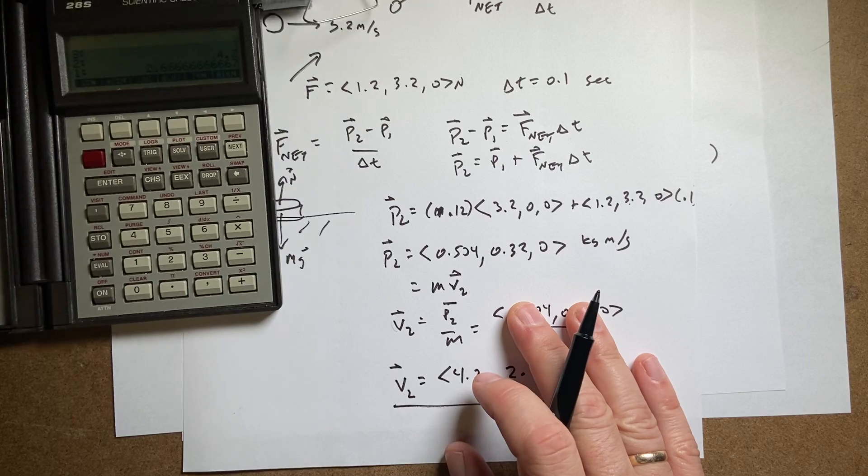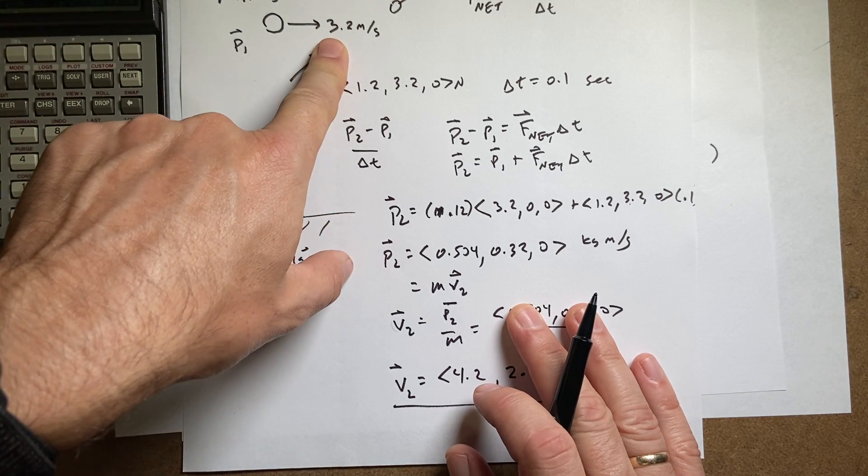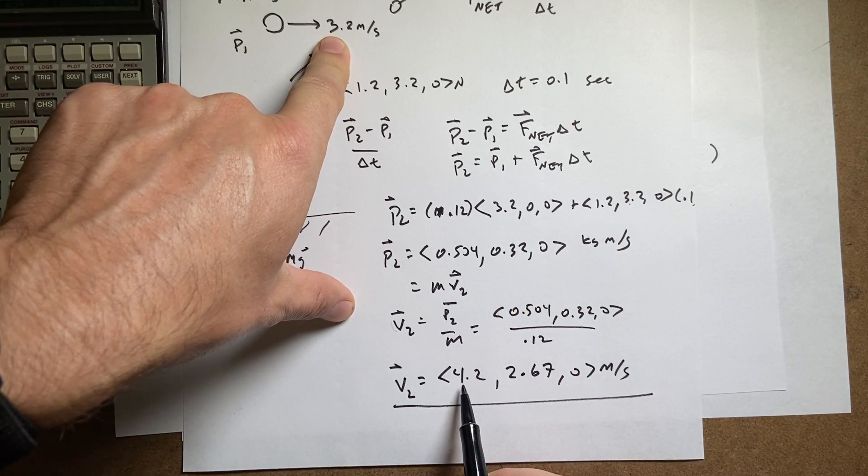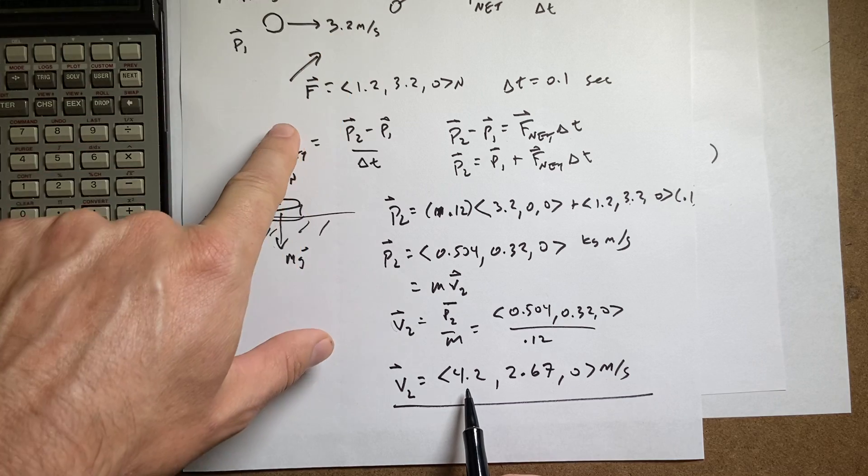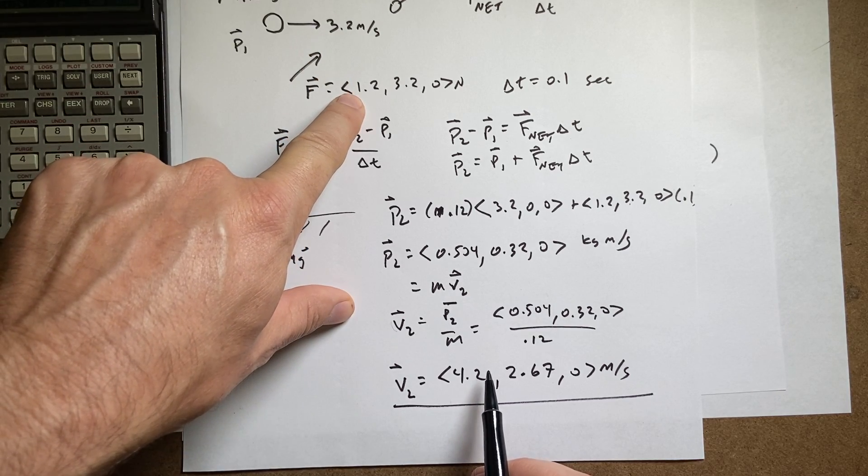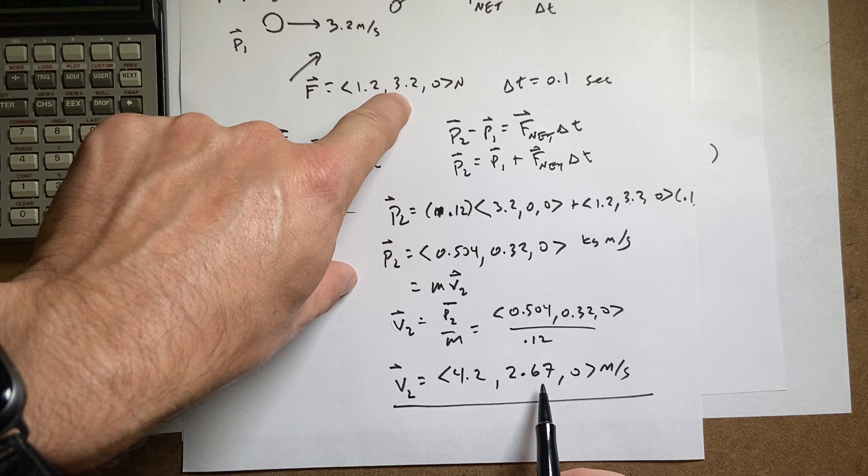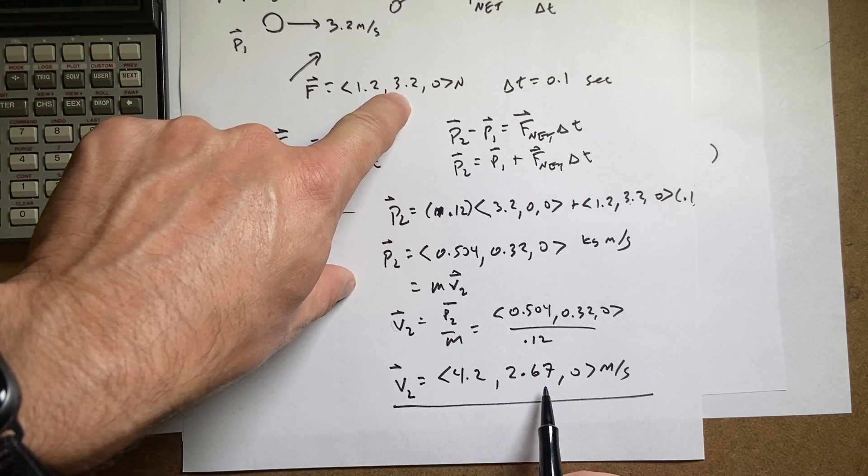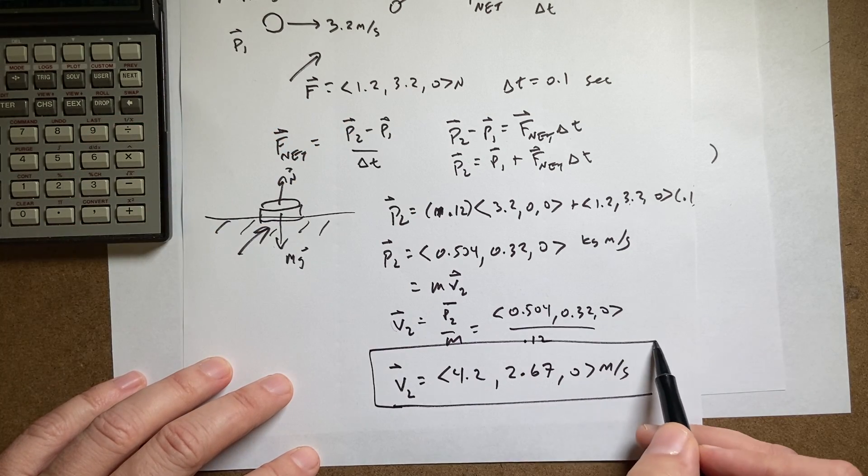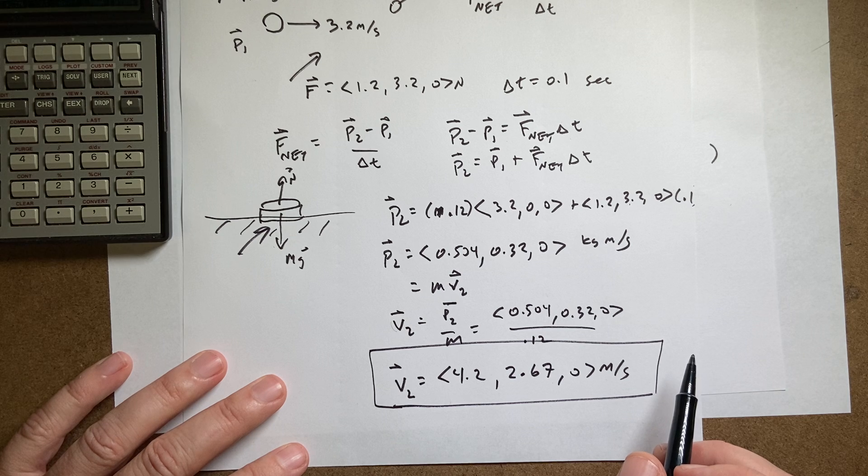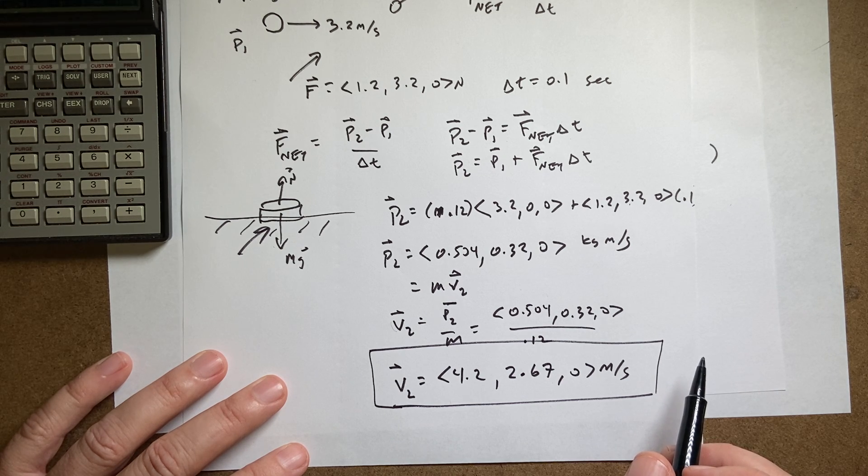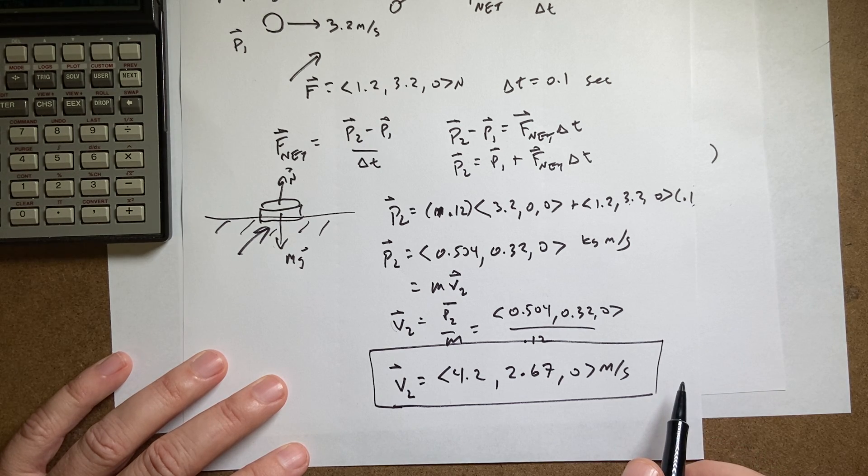Now let's just think about that for a second. It was going 3.2 meters per second in the x direction. Now it's speeding up in the x direction because the force did push it in the x direction. And it also has some velocity in the y direction because the force pushed in the y direction. So the velocity in the y direction changed too. There's your answer. If you want to find the magnitude you can, but you don't have to. So that's it.